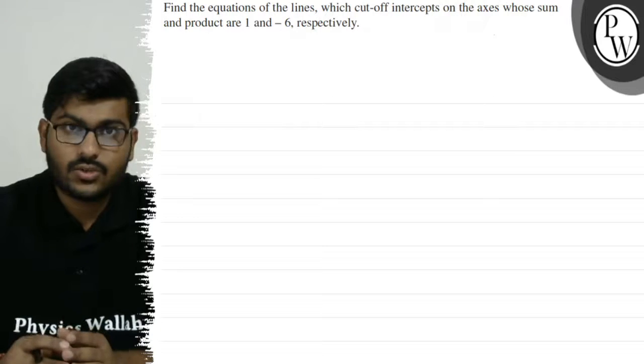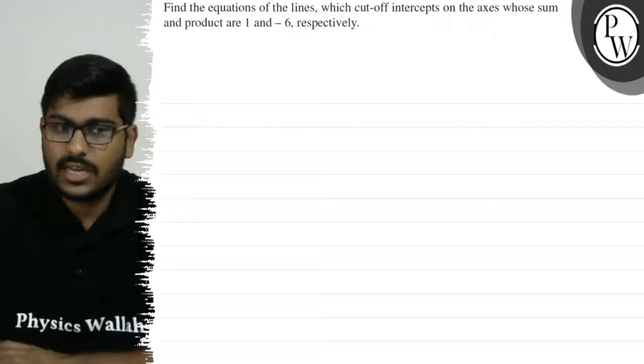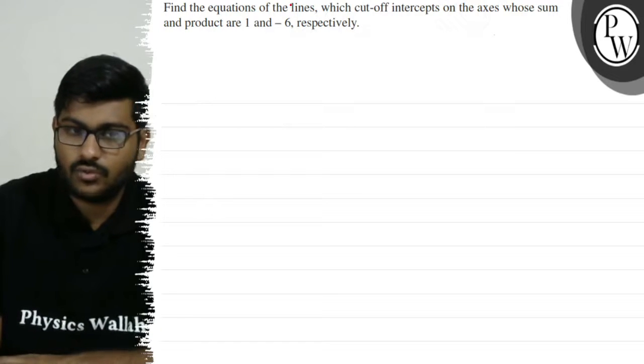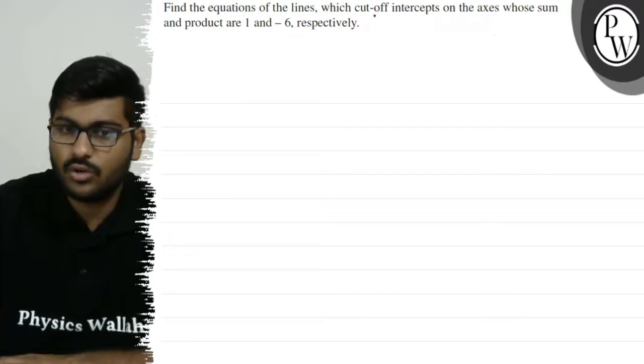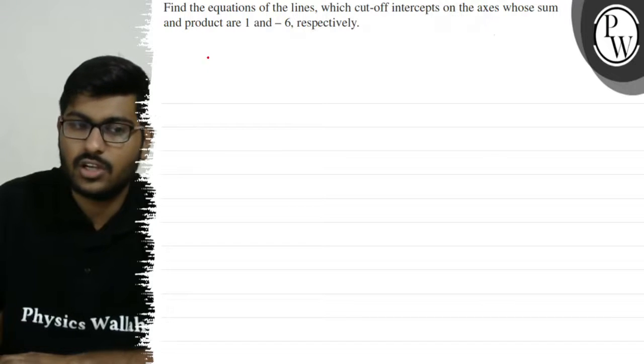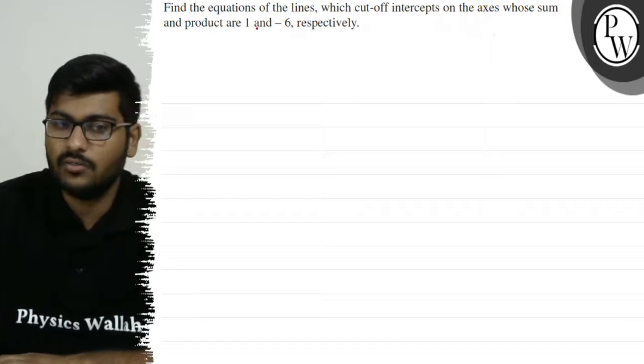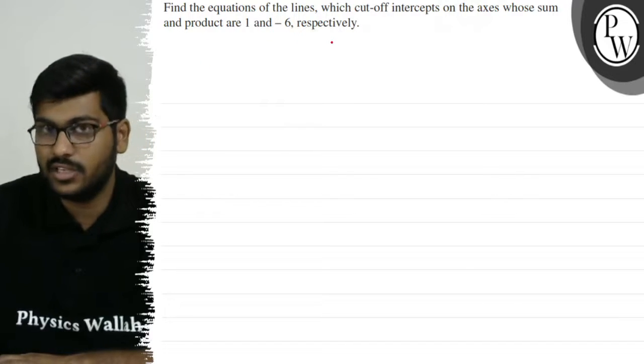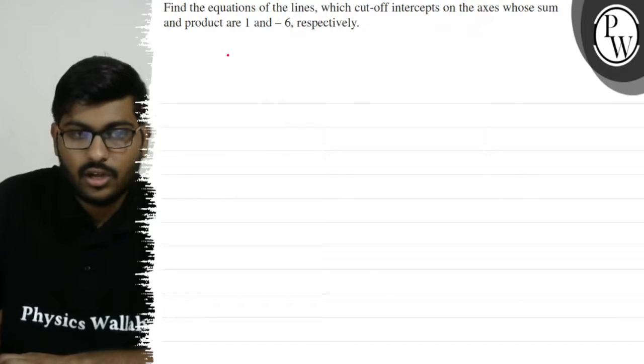Hello, let's see this question. The question says: find the equations of the lines which cut off intercepts from the axis whose sum and product are 1 and minus 6 respectively.